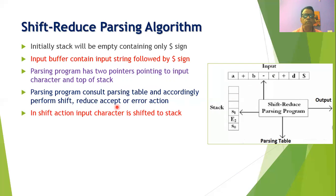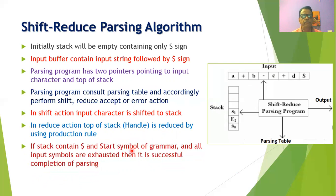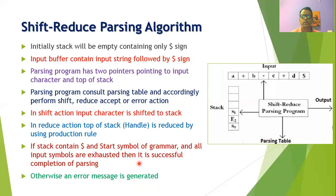In the SHIFT action the input character is shifted to the stack. In the REDUCE action the handle at the top of the stack is reduced using a production rule. If the stack contains only a dollar sign followed by the start symbol and all input symbols are exhausted, it is a successful completion of parsing. Otherwise, an error message is generated by the parsing program.